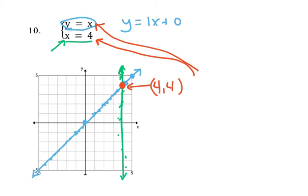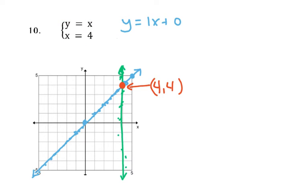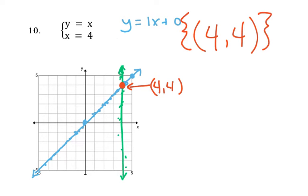When we talk about a solution to a system of equations, one of the most common ways to write our solution is as an ordered pair. Sometimes in some contexts we put it in set notation, but if you just write it as an ordered pair, we're good.